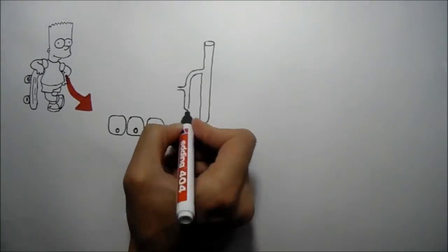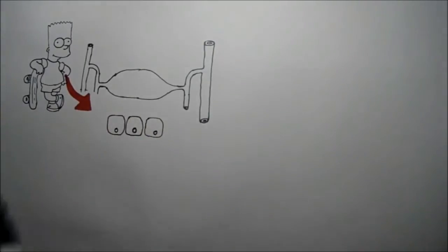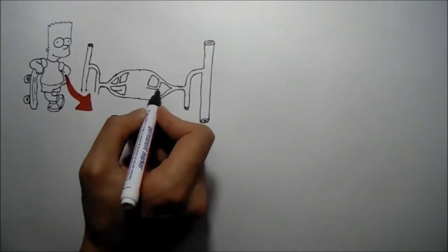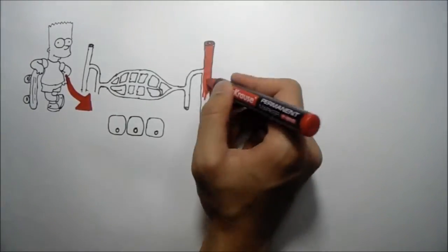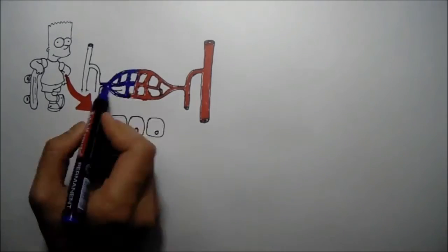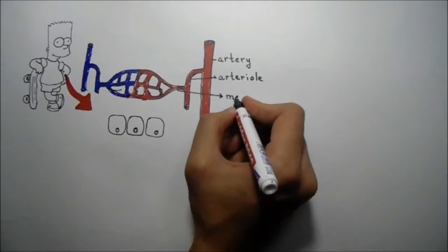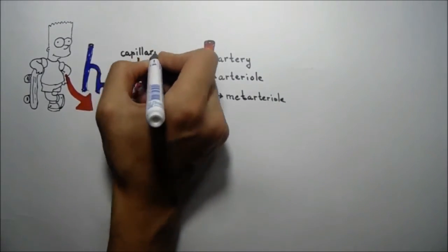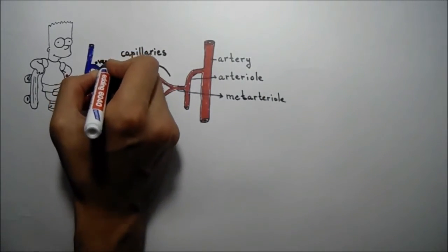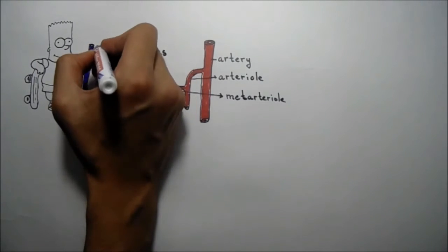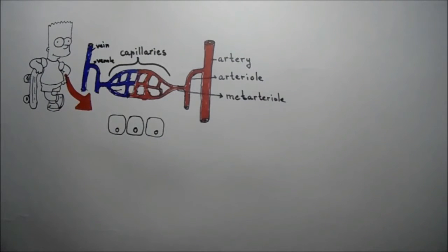So here we have some cells and here I will draw an artery which is coming and carrying oxygen, water, nutrients, etc. First artery will be divided into the arterioles, then to the metarterioles. Those metarterioles further are divided to the capillary networks and finally capillaries collect into the venules, venules to the veins and of course veins go to the heart.